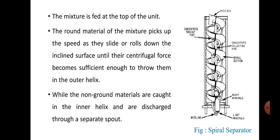Because of this greater motion, sufficient centrifugal force develops on round grains, which throws them into the outer helix. As mentioned, the vertically mounted screw conveyor consists of two helixes — the inner and the outer. Due to high speed, sound or round grains are thrown into the outer helix, while non-round material, having low speed, remains in the inner helix.